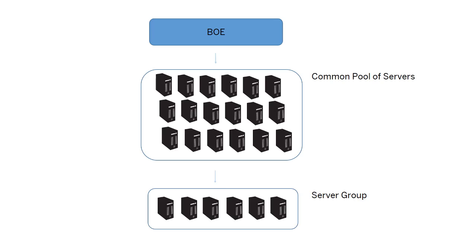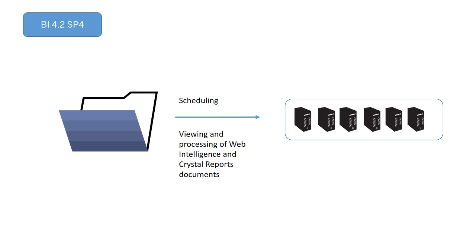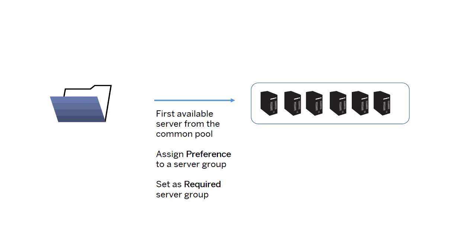In BOE you can create a server group from the common pool of servers and assign them to a folder. In BI 4.2 SP4 you can map a folder to a server group for scheduling of reports, or viewing and processing of web intelligence and crystal reports documents in the folder. When you map a folder to a server group you can either choose the first available server from the common pool, assign preference to a server group, or set a server group as required to run the object.